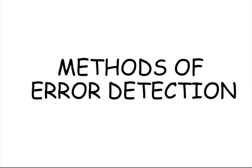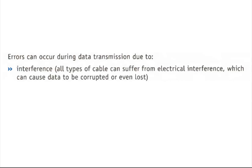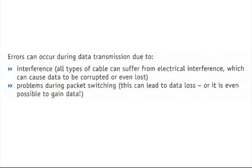Why is there a need to check for errors? When data is transmitted, there is always a risk that it may be corrupted, lost, or even gained. Errors can occur during data transmission due to interference. All types of cable can suffer from electrical interference, which can cause data to be corrupted or even lost. Problems during packet switching can lead to data loss, or it is even possible to gain data.